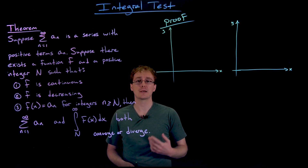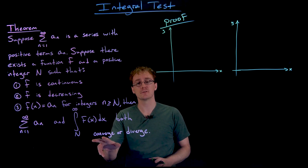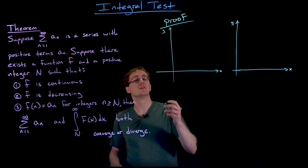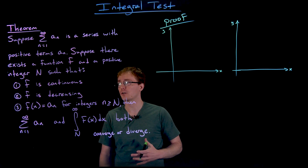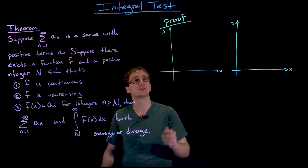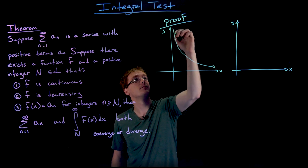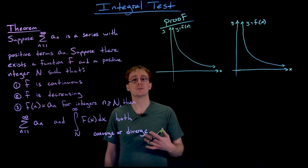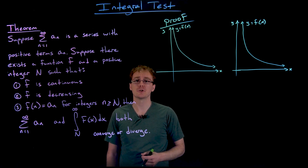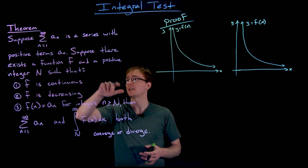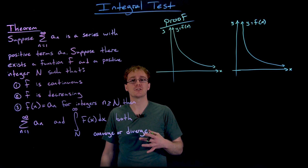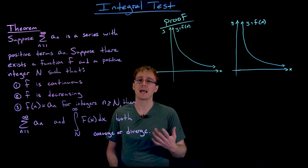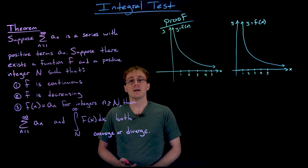There are two pictures and two parts to this proof — one showing convergence and the other showing divergence — and I'll do them simultaneously. Both start by drawing the curve that generates the terms in our series. We don't know exactly what it looks like, but we know it is continuous and decreasing. We can also assume it approaches zero, because from our earlier divergence test, if the terms aren't approaching zero the series already diverges.